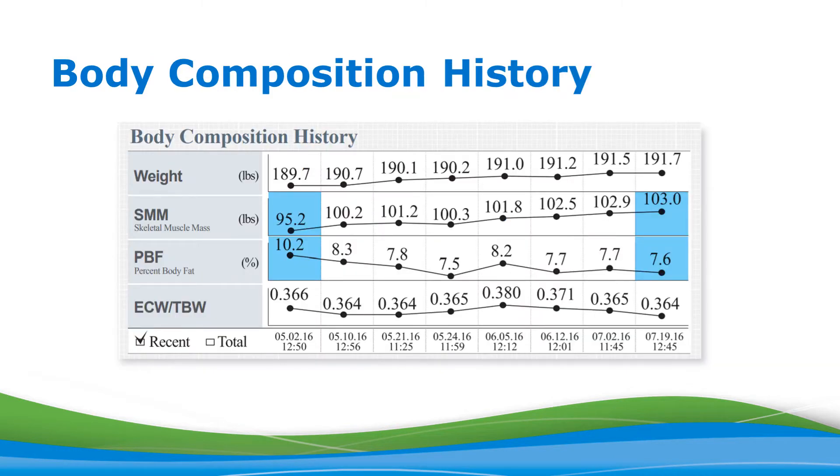On the bottom section of the graph, we have the body composition history. This section shows the tracking history of a few key measures if you do the InBody test over multiple sessions. With this feature, you can see positive or negative changes over time. In our example, skeletal muscle mass has slowly gone up over time from 95.2 pounds to 103 pounds, and percent body fat has gone lower from 10.2% down to 7.6%—both examples of positive long-term changes.